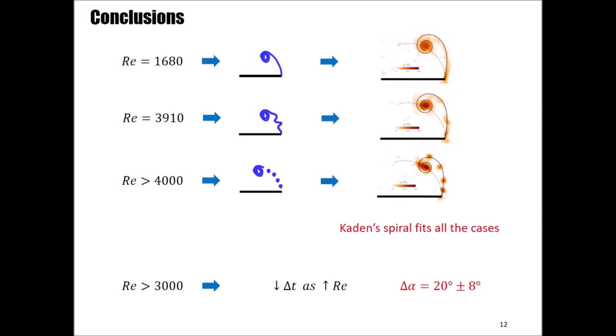To summarize and conclude, we observe the existence of three different flow topologies or regimes that are strongly dependent on the Reynolds number. The common feature between them is the spiral shape that allows us to fit all the cases with Kaden's equation. We also defined the timing in degrees and seconds and computed it for every tested case with a Reynolds number higher than 3000. The timing in seconds is obviously decreasing with the Reynolds number, while on the other side, the angular timing remains constant for every tested Reynolds number.